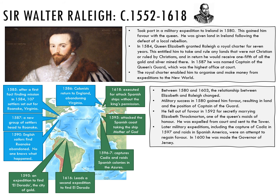Raleigh's relationship with Elizabeth changed between 1580 and 1603. Military success in Ireland in 1580 made him a favourite, and Elizabeth granted him lands and made him Captain of the Guard. However, he fell out of favour in 1592 for secretly marrying one of the Queen's maids of honour, Elizabeth Throckmorton, and was expelled from court and sent to the Tower. Later, military expeditions to Spain — including the capture of Cadiz in 1597 — and to South America were an attempt to win back the Queen's favour, and this seemed to work as he was made Governor of Jersey in 1600.